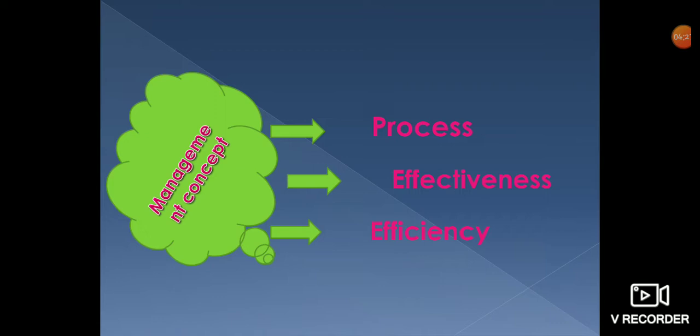First, we will read what is process. Process means the primary functions that management performs to get things done. These functions are planning, organizing, staffing, directing, and controlling. In this same book, later on, we will read all these functions in separate chapters.